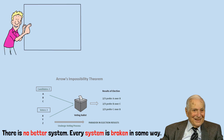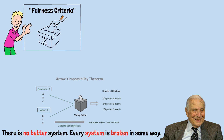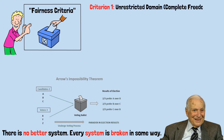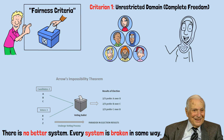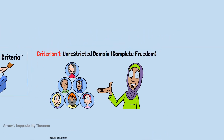Arrow started with what he called fairness criteria — basic things you'd want any reasonable voting system to satisfy. Criterion 1: Unrestricted domain, or complete freedom. Voters can rank candidates in any order they want, with no restrictions on preferences. In a democracy, you should be able to prefer whoever you want in whatever order.